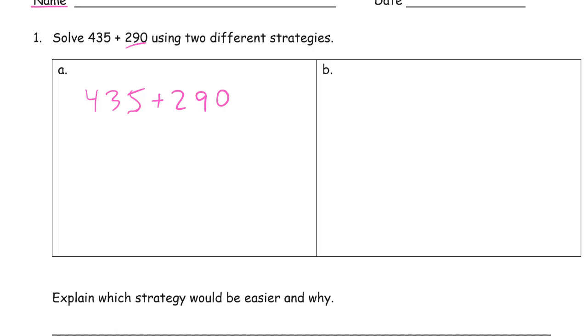Now, I could draw a tape diagram for this, or I could just think 425 is 10 less than 435. I'll call that 300 plus the 425, and it's 725.